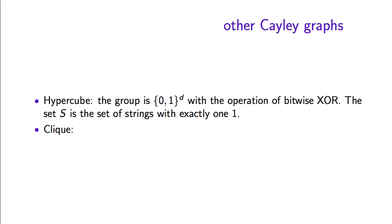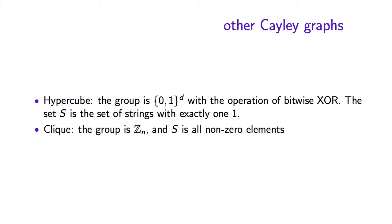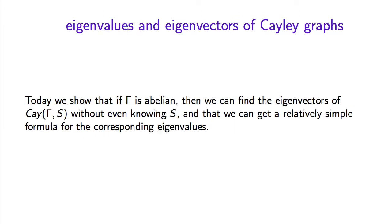One more example: the clique is a Cayley graph defined by taking the group of integers modulo n and letting S be all elements of the group except 0. This gives an (n-1)-regular graph.